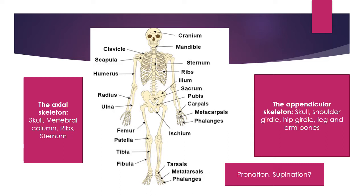Down at the bottom right you can see two words: pronation and supination. This refers to the positioning of the hands. An easy way to remember this is if our palms are facing upwards, they are in a supine position — we can remember that by referring to holding a cup of soup. If we turn our hands over, we pronate them. The skeleton in the middle is standing in a supine position with palms facing upwards and towards us.